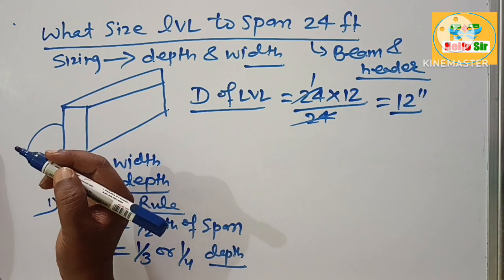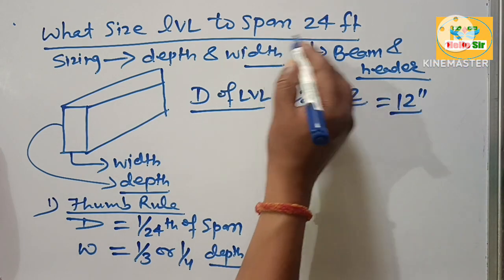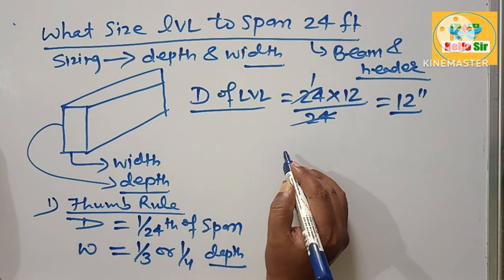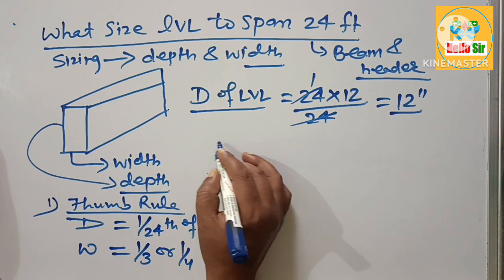Required depth of LVL is about 12 inches needed to span 24 feet.